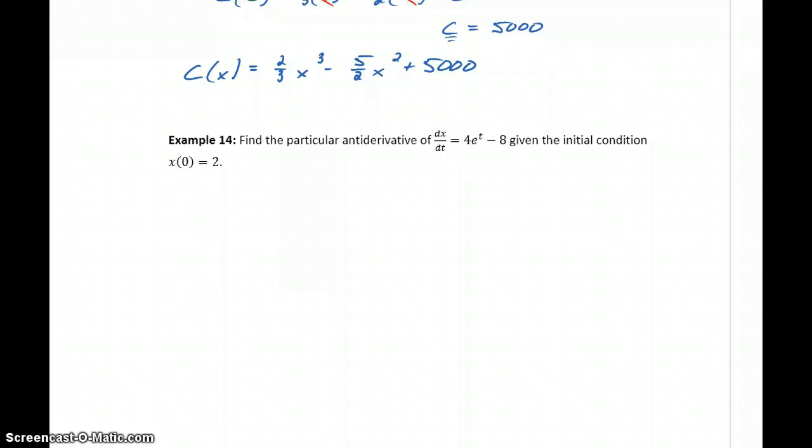We want to look at doing exactly the same thing in example 14. We want to find the particular antiderivative for this derivative function 4e^t - 8. So what we want to find is x(t).